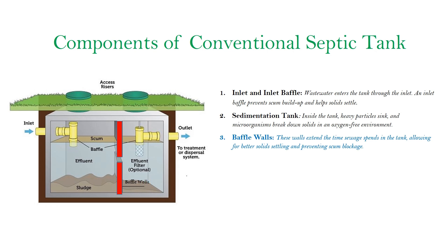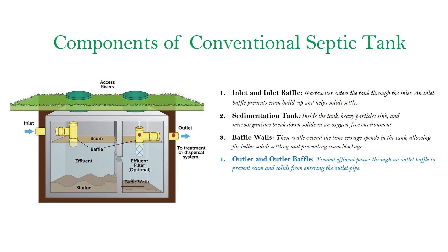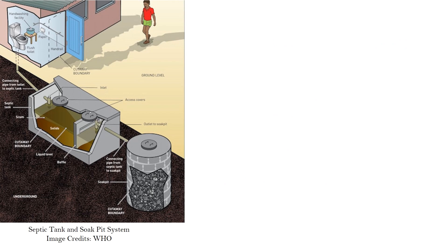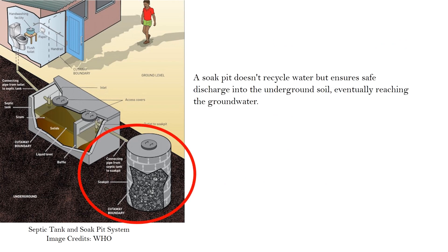Fourth, the outlet pipe and outlet baffle: treated effluent passes through an outlet baffle to prevent scum and solids from entering the outlet pipe. Fifth, the soak pit or drainage field: the final treated effluent goes to a soak pit or drainage field, where additional purification occurs before it reaches the groundwater. A soak pit doesn't recycle water but ensures safe discharge into the underground soil, eventually reaching the groundwater.